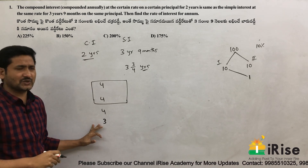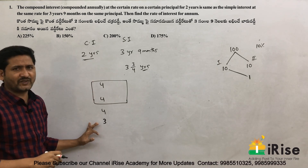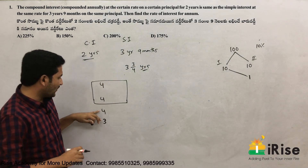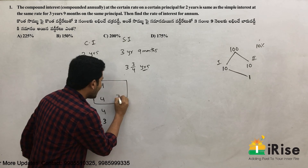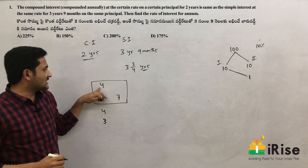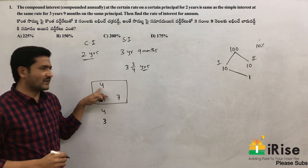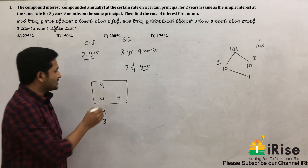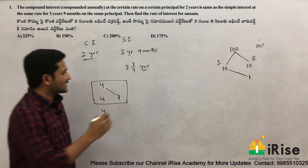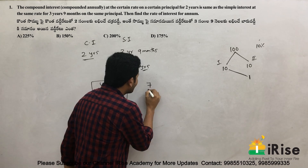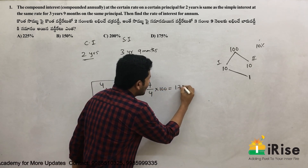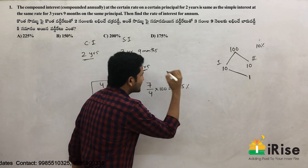Simple interest is 15 units, and 2 years' compound interest is also 15 units. That means 4 plus 3 — 7 is extra. So 7 is the first year's interest on interest. Therefore the rate of interest = 7 divided by 4, multiplied by 100 = 175 percent.